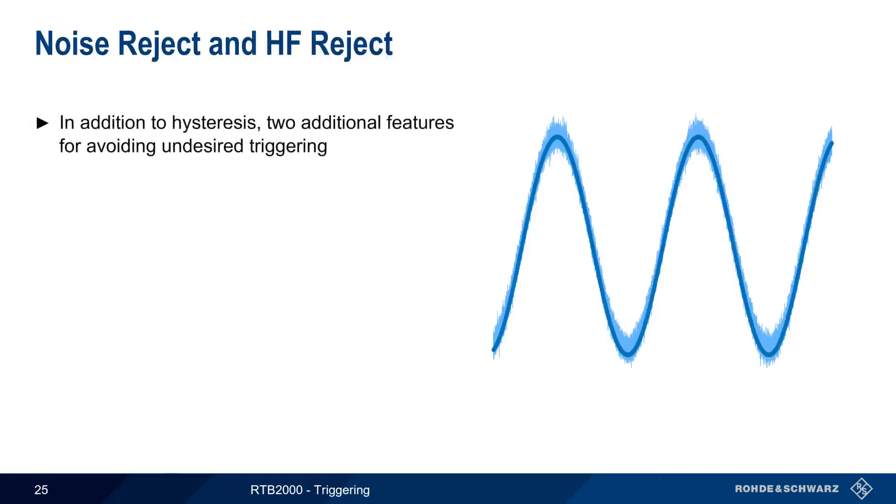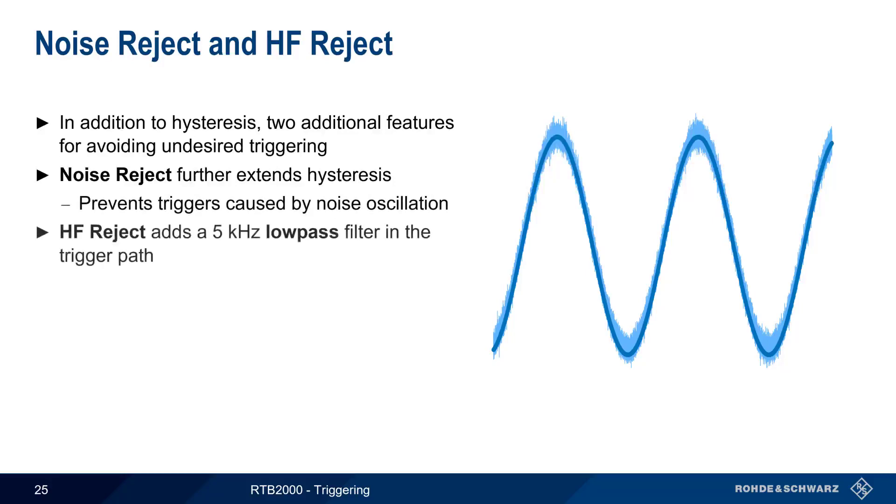In addition to hysteresis, the RTB has two additional features that can be used to avoid undesired triggering. The first of these is noise reject, which prevents triggers caused by noise oscillation. The other feature is HF, or high-frequency reject, which adds a 5 kHz low-pass filter to the trigger signal path. This removes high-frequency noise and other spurious signals that could lead to undesired triggering. Note that only one of these features can be active at any time.